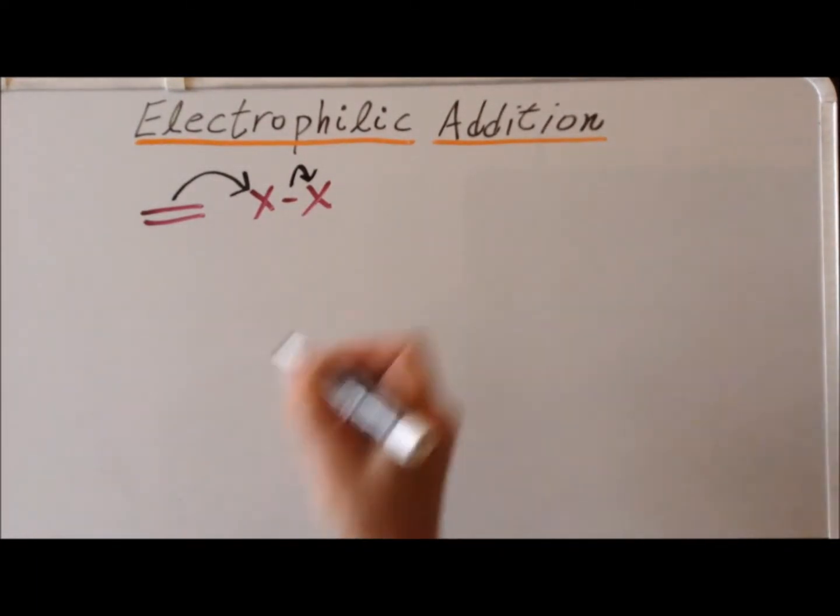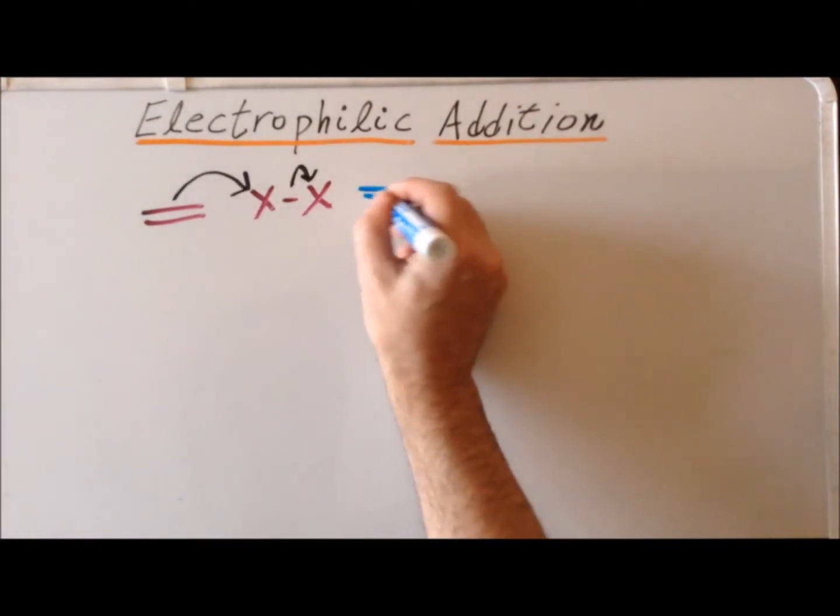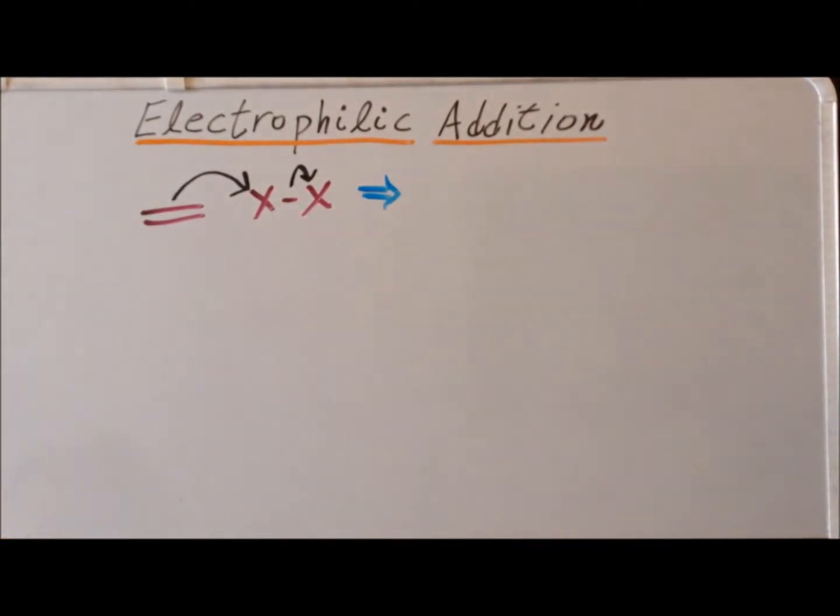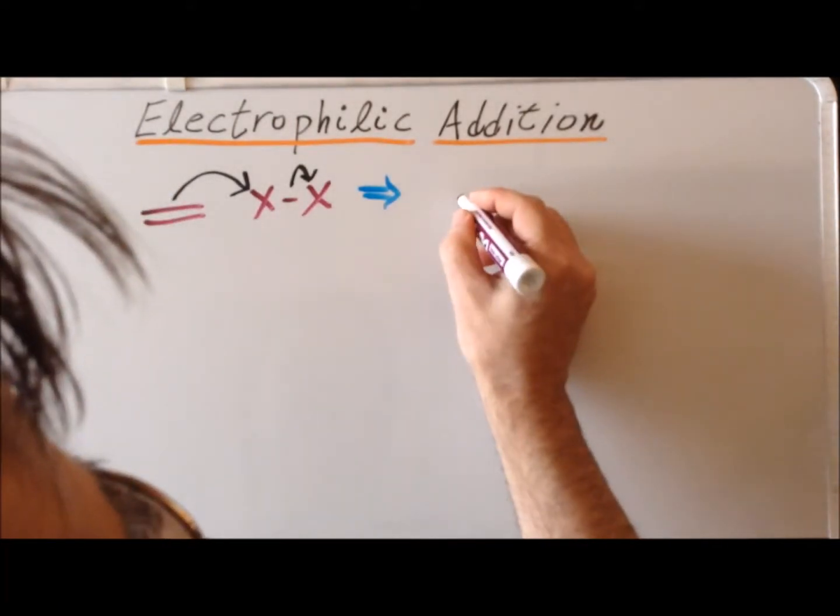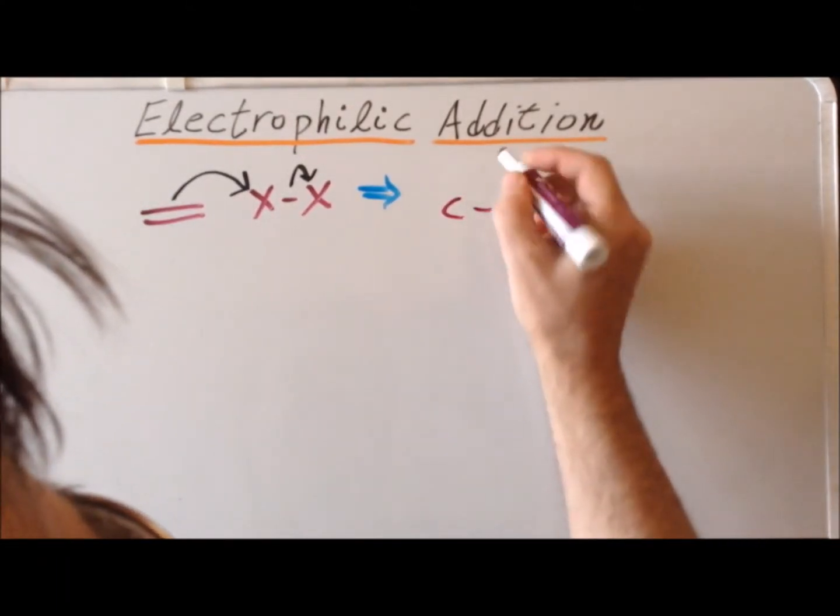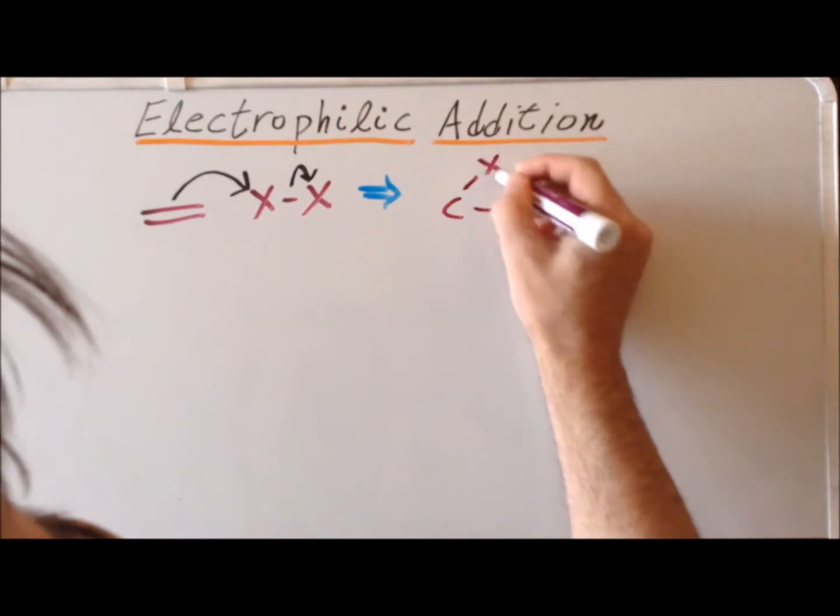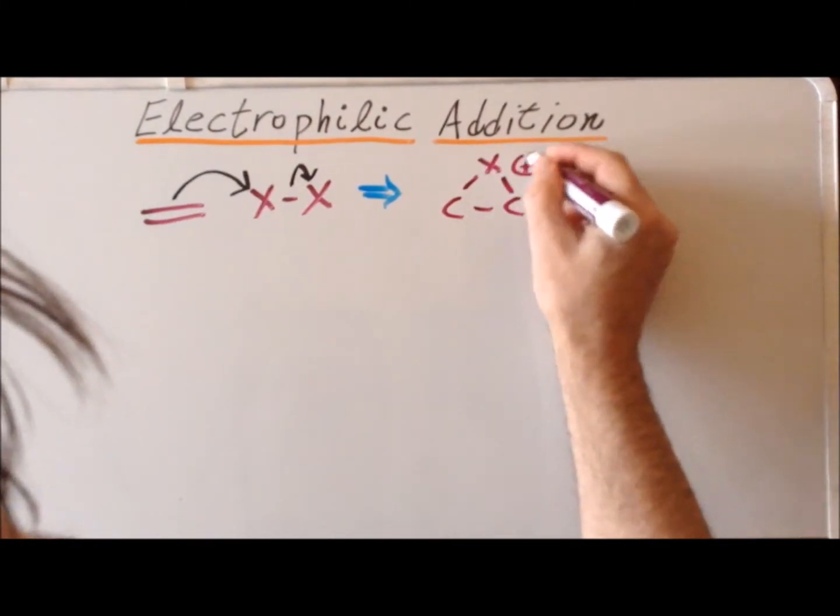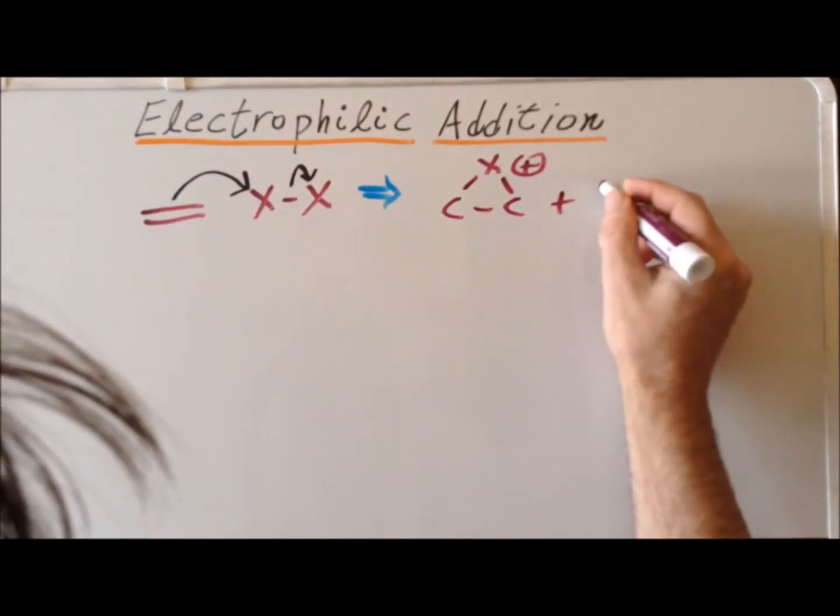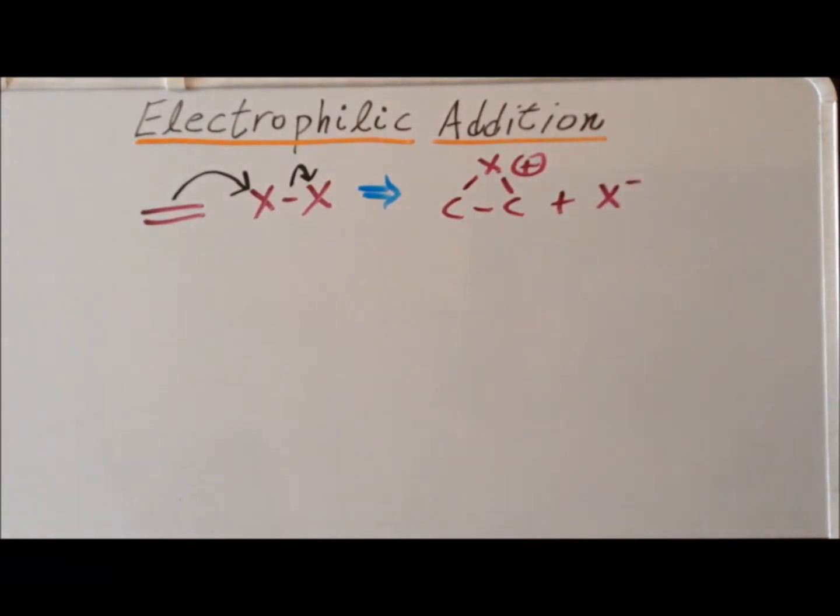And as a result, we get first a cyclic structure with a positive charge, plus the halide.